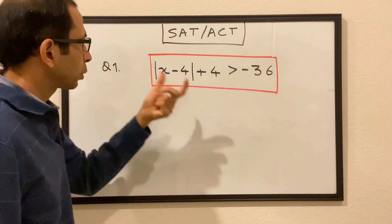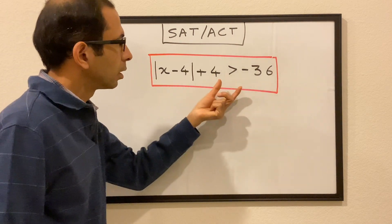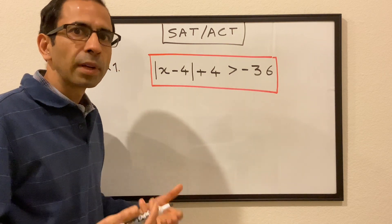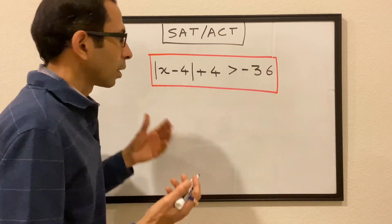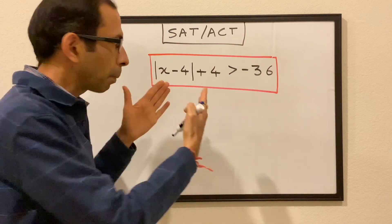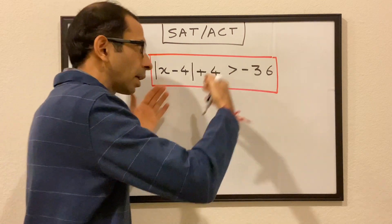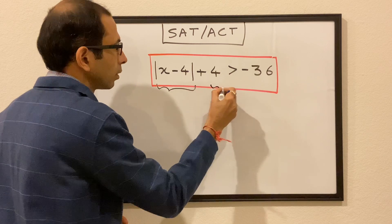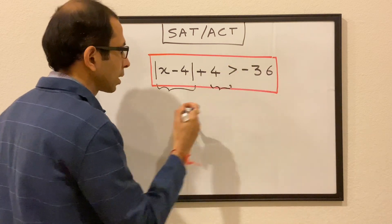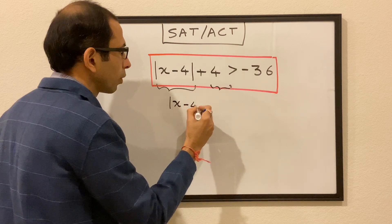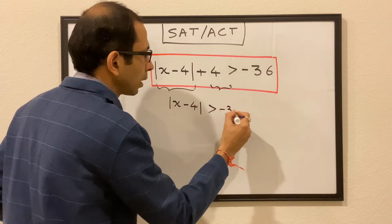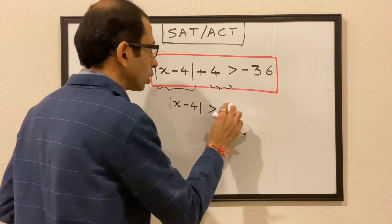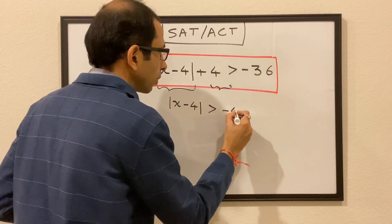Our very first question is: absolute value of x minus 4, plus 4, is greater than minus 36. We have to find the possible values of x. The first thing we do is keep the absolute value term on the left side and get everything else onto the right side. So we move 4 to the right side and get: absolute value of x minus 4 is greater than minus 40.